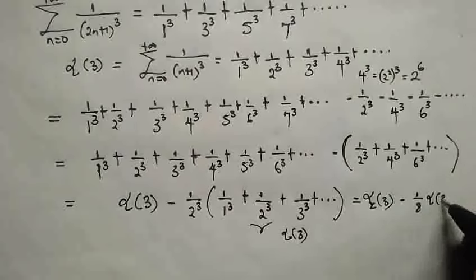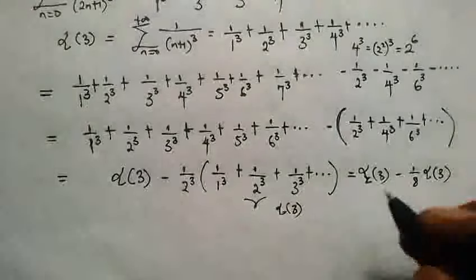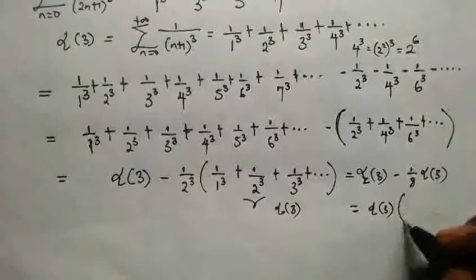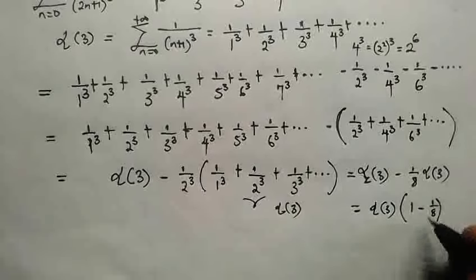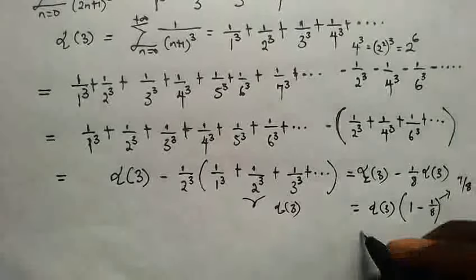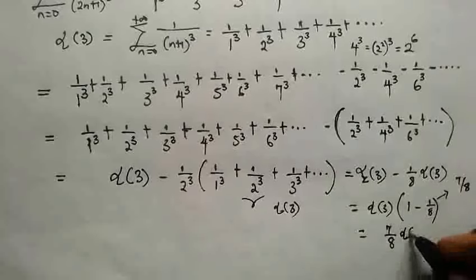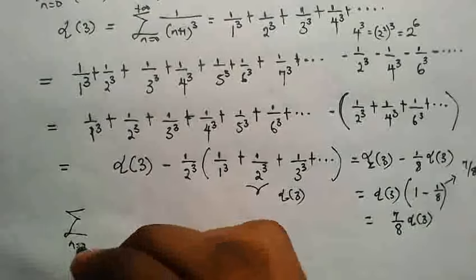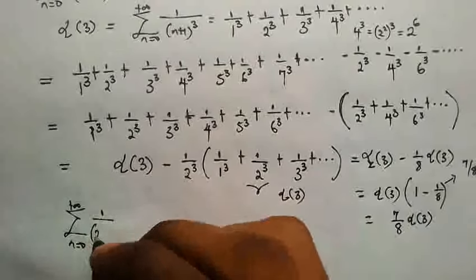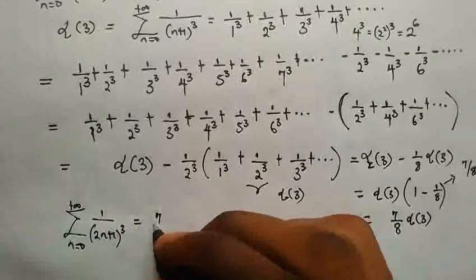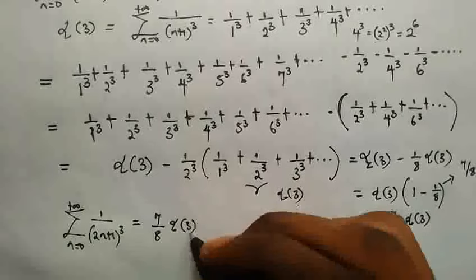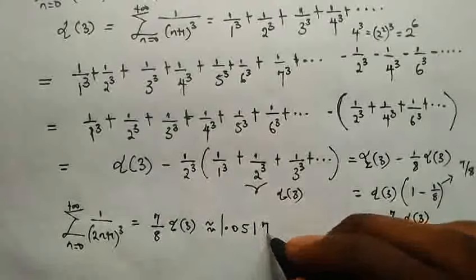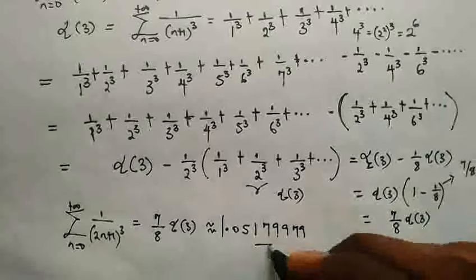Now we can factor out the Riemann zeta(3): we get (1 - 1/8) × zeta(3) = 7/8 × zeta(3). Therefore the sum as n goes from 0 to positive infinity of 1 over (2n+1)³ is exactly equal to 7/8 times the Riemann zeta(3), which is approximately equal to 1.051799. This is the answer.